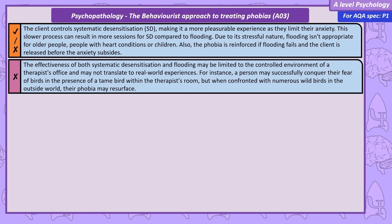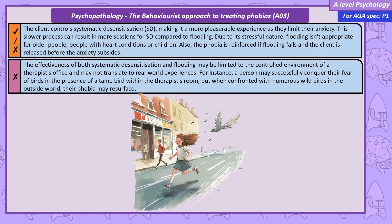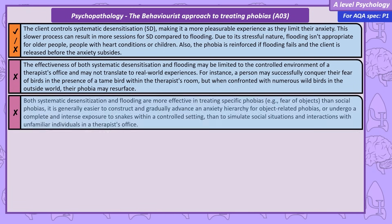A problem with both systematic desensitisation and flooding is they may seem effective in the controlled environment of the clinician's room, but this effect might not generalise to the real world. For example, someone may overcome their phobia of birds when in a room with a tame bird, but when outside the therapist's office and exposed to a large number of wild birds, the phobia might return. We might also argue that both therapies are better at treating phobias of objects than social phobias — it's easier to build an anxiety hierarchy around buttons or arrange full exposure to snakes in a controlled environment than to replicate a party and interactions with strangers in a therapist's office.